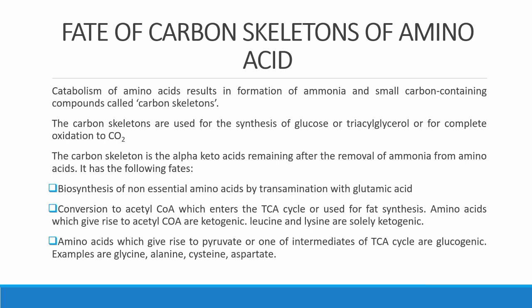When the amino group is removed, we are left with the carbon skeleton, also called the alpha-keto acid or keto acid. This keto acid has different fates in the body: it can be converted to an intermediate of the TCA cycle, converted to pyruvate, converted to acetyl-CoA, or converted to ketone bodies, which are formed from acetyl-CoA.